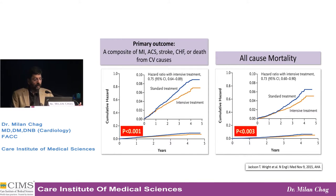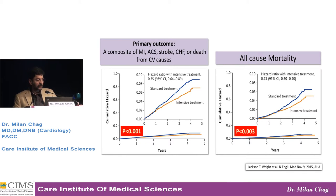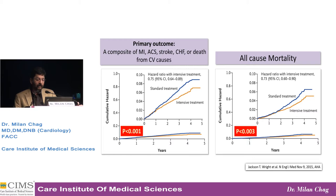Patients on intensive treatment did better. The composite of MI, ACS, stroke, heart failure, or death due to cardiovascular causes was significantly less with the intensive arm. The p-value was highly significant. Similarly, all-cause mortality was significantly less with intensive treatment.